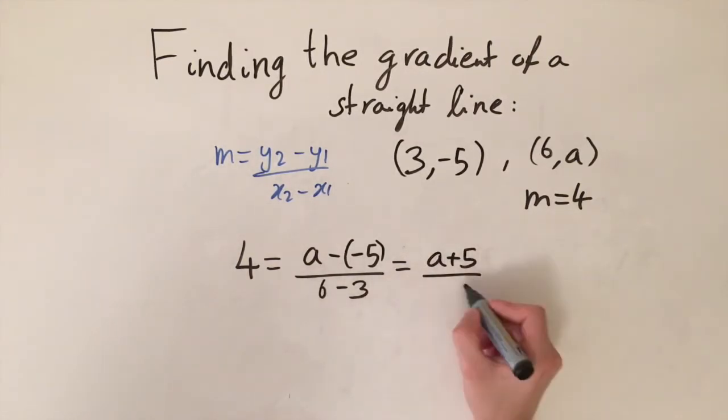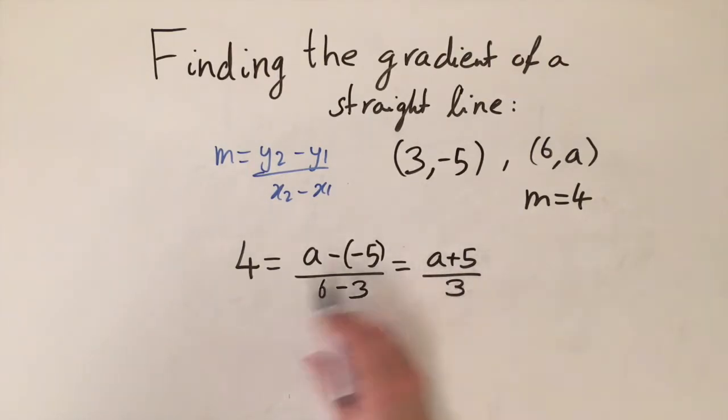So now to find out the value of a we just need to solve this simple equation. We're going to do this by multiplying both sides by 3, so we're going to get 12 is equal to a plus 5, and then just subtracting off by 5 we get that a is equal to 7.